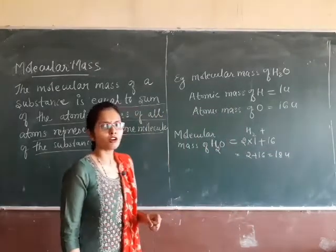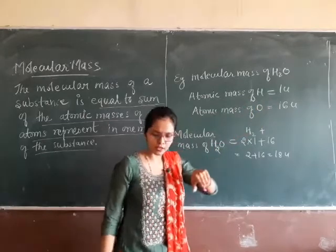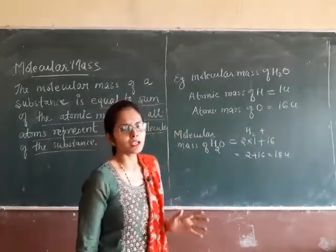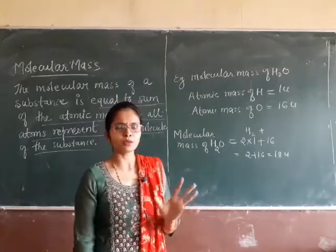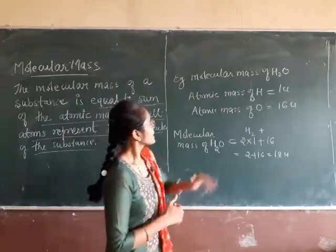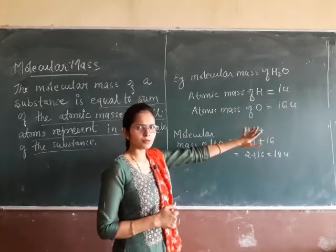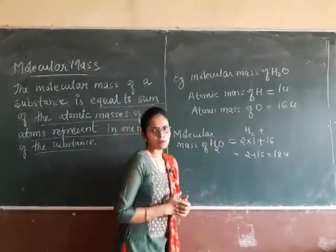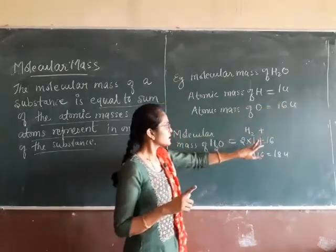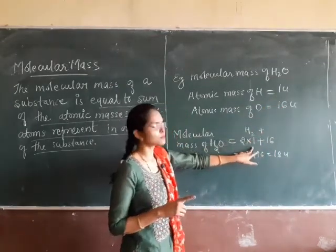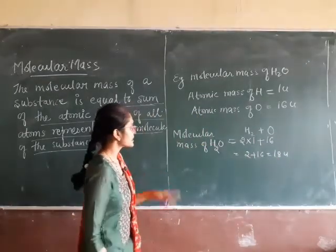So molecular mass of water is 18U. Let's review: atomic mass of hydrogen from the table is 1U, atomic mass of oxygen is 16U. Water H2O has 2 hydrogen atoms so we multiply 2 × 1 = 2, and oxygen has mass 16. Total: 2 + 16 = 18U. That is the first example done.